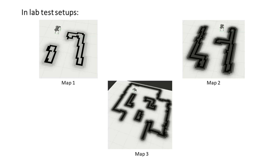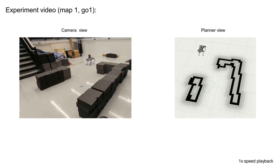We have demonstrated the effectiveness of our method on real robots in lab settings. These experiments were conducted on various maps, each exhibiting escalating complexity from 1 to 3. The following experiment videos showcase real-time planning and are played back at 1x speed.